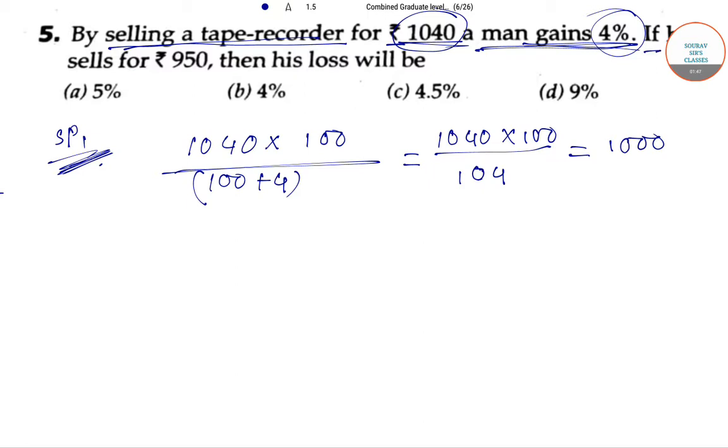Now if he sells it for 950 rupees, then his loss will be which of the following. That is our question. So for the second selling price of 950, and we have the cost price 1000, we can calculate: loss equals 1000 minus 950.